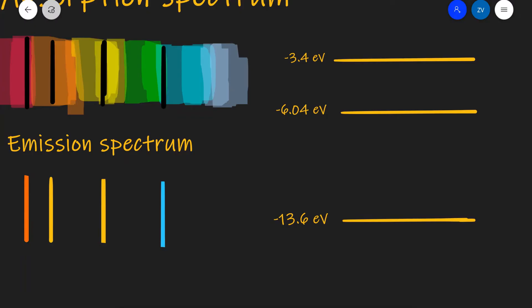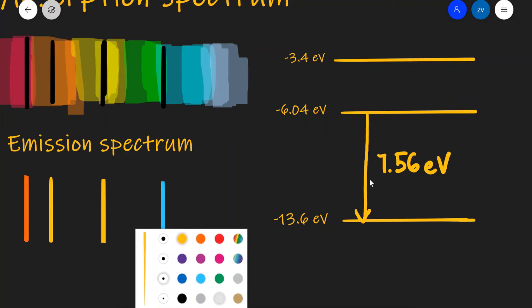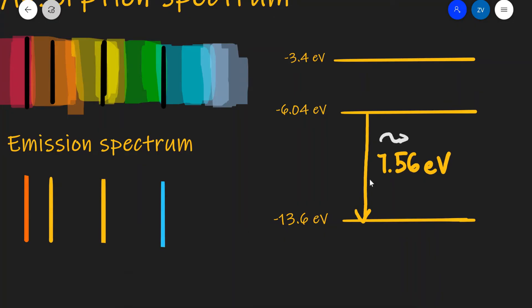For instance, if we had an electron go down in energy level from minus 6.04 to minus 13.6, this would give us a photon with precisely the energy of 7.56 electron volts. Because only this transition is allowed, we could only get a photon emerging at that precise energy.